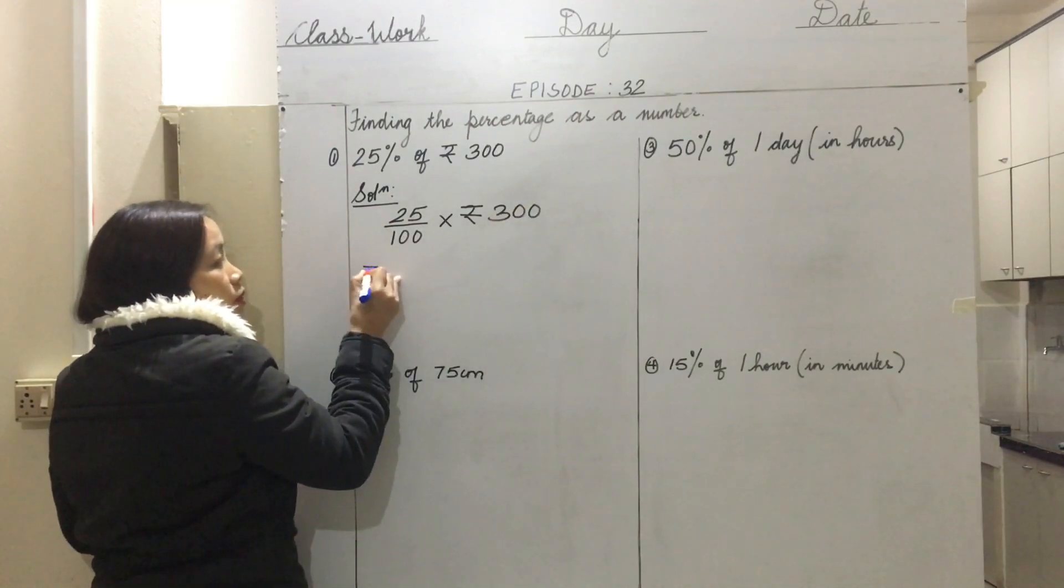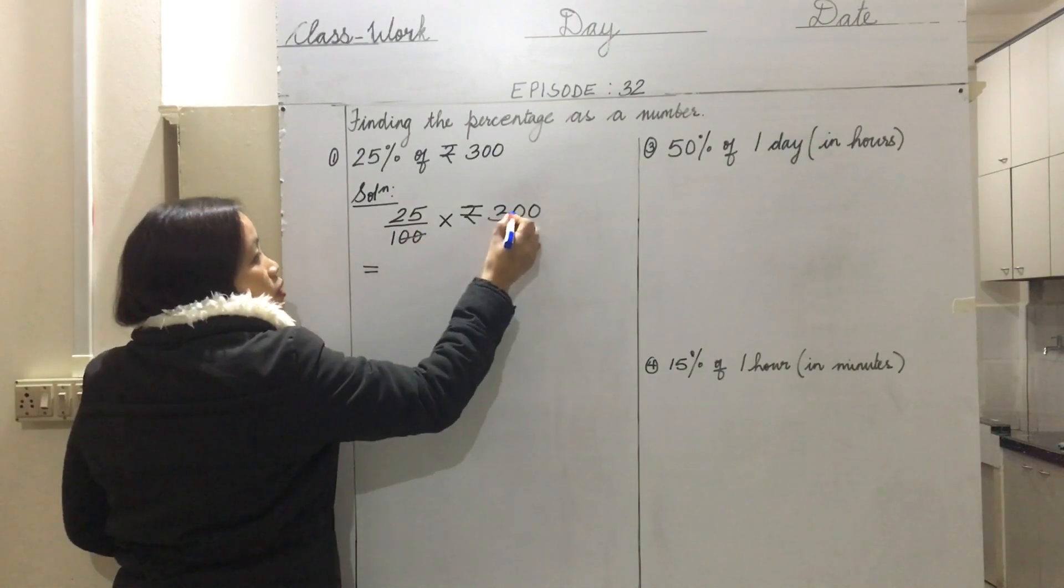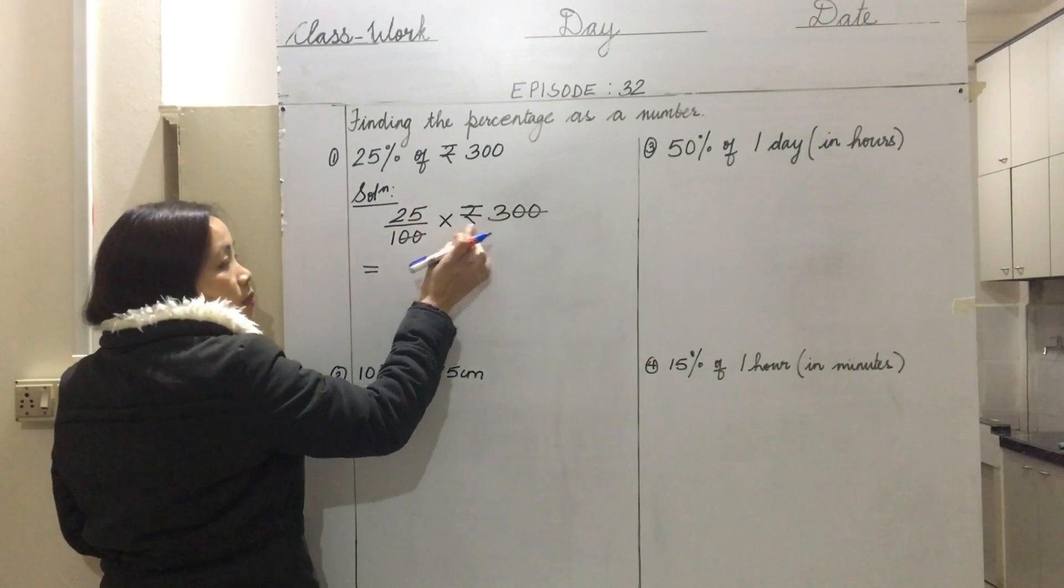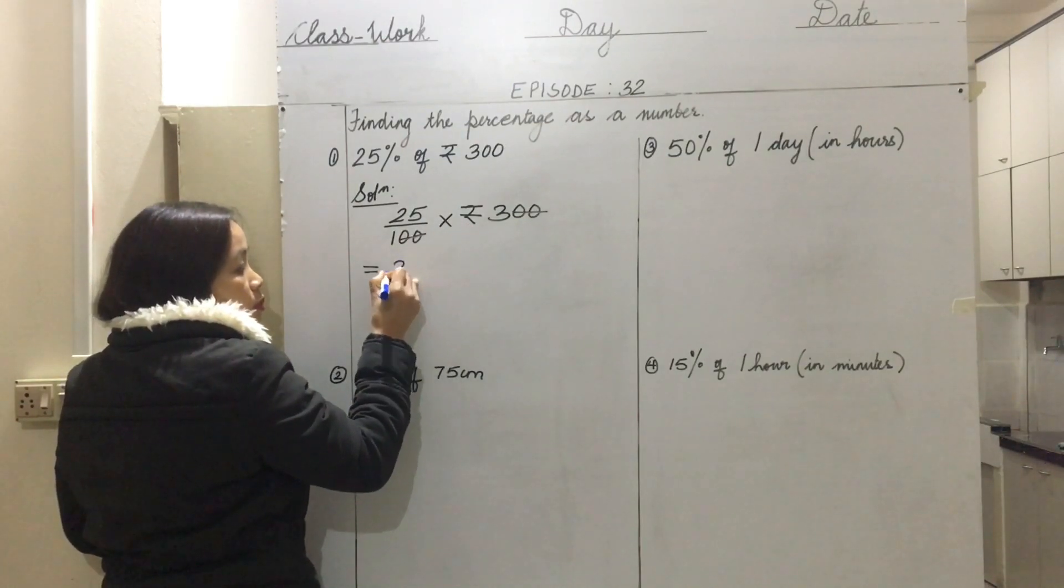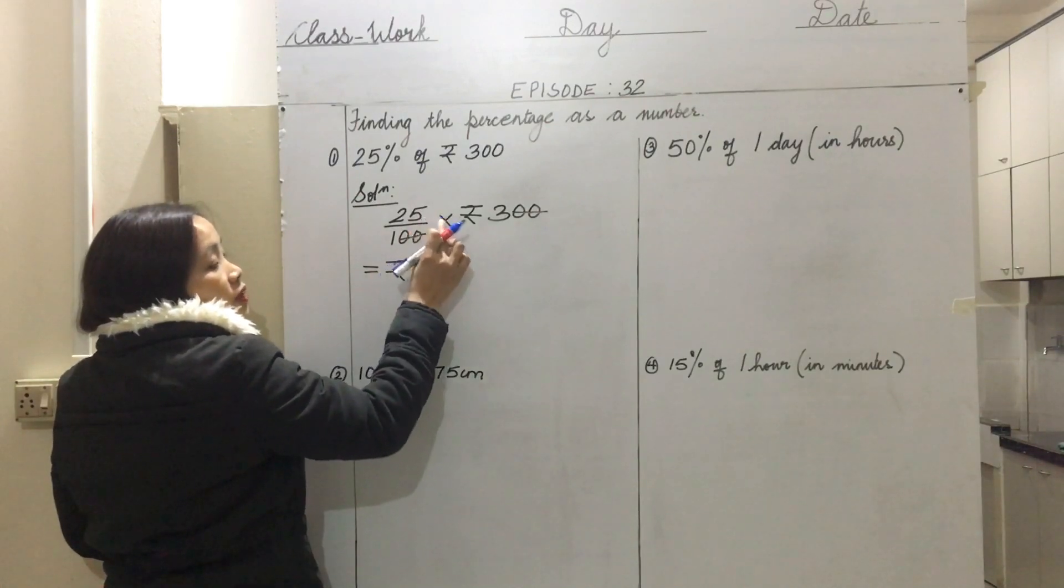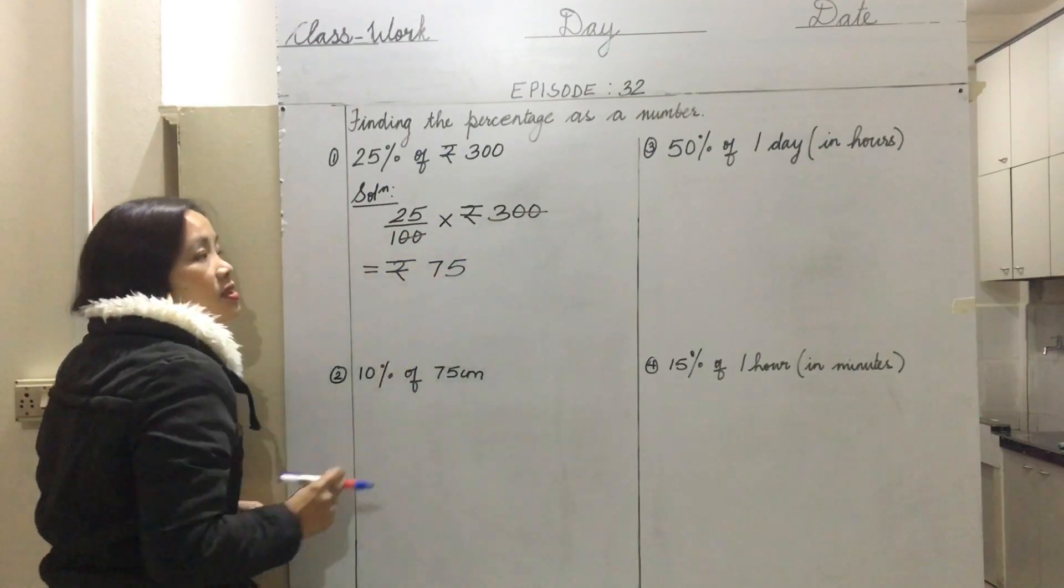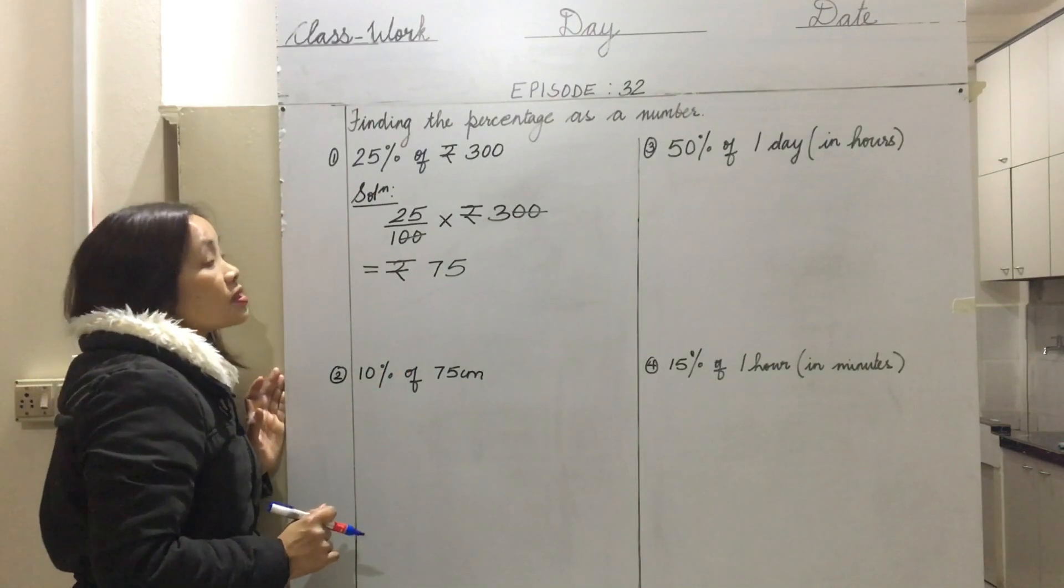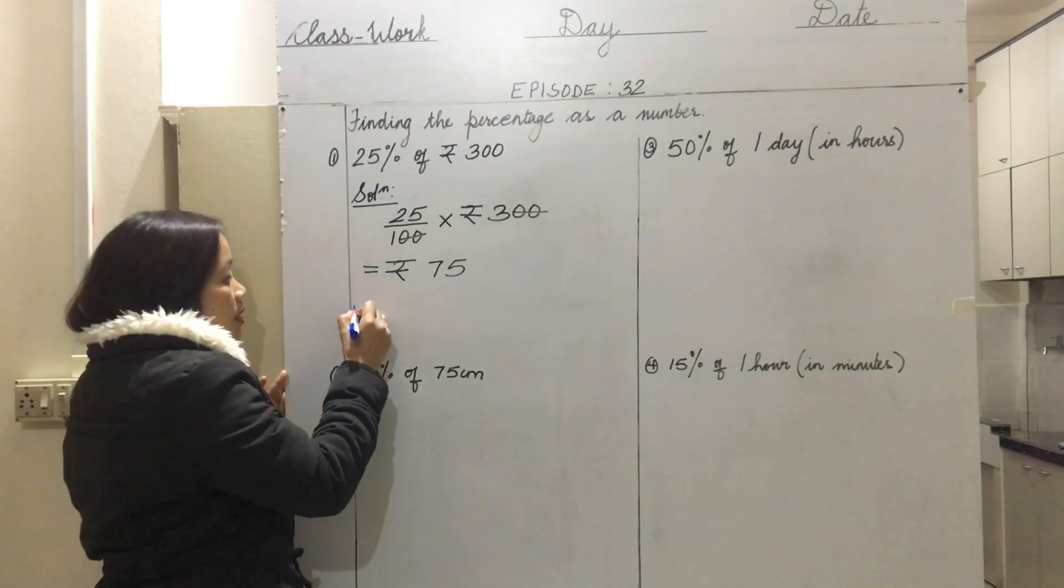Then we reduce two zeros. Two zeros are reduced, so what do we get? 25 multiplied by 3. Do not forget to write the units here - the units is rupees, so we will be writing rupees symbol here. 25 multiplied by 3 means 75. That means in 300 rupees, the 25 percent value is 75 rupees. Then you will write the answer at the end: 75 rupees.